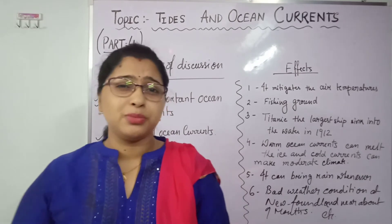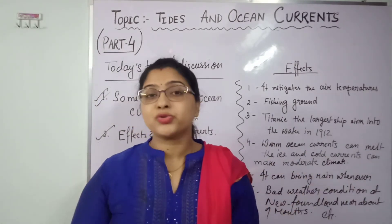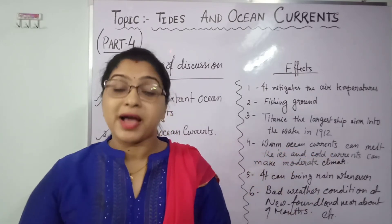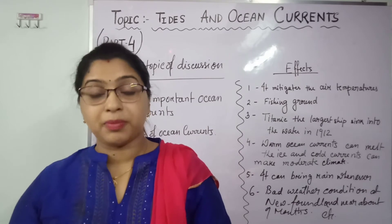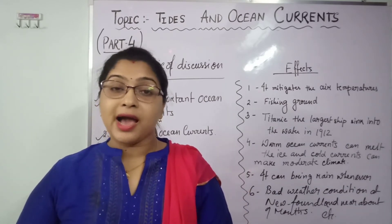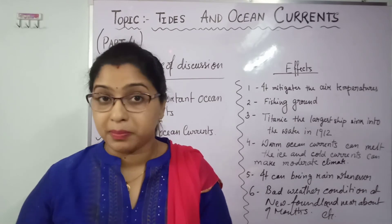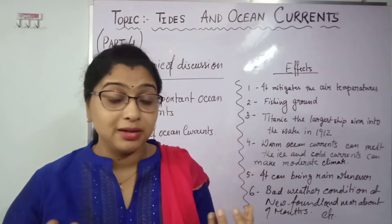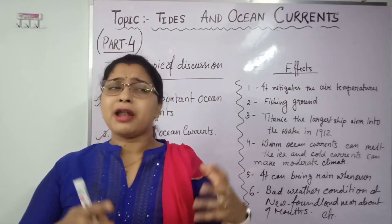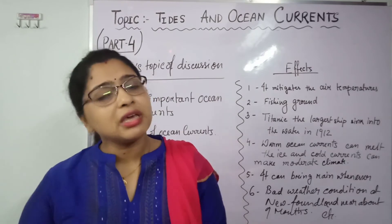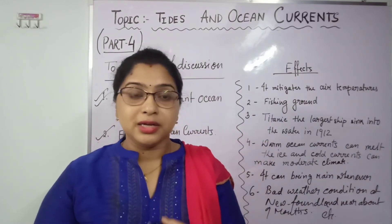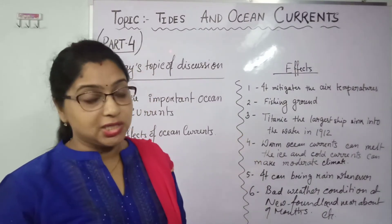The Titanic disaster is also related to ocean currents. The Titanic was one of the largest ships of its time, carrying around 2,000 passengers. The cold Atlantic oceanic current brought many icebergs into those waters. People could not see them because of dense fog, and 1,500 people perished when the ship sank in just two to three hours. This shows how devastating these conditions can be.